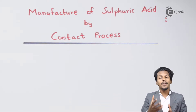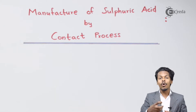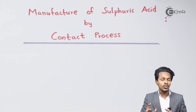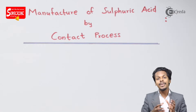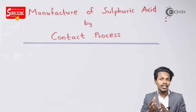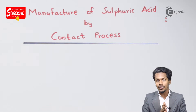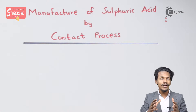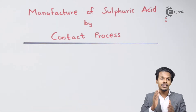Sulfuric Acid is basically prepared from Sulfur. By doing the oxidation process, Sulfur can be converted into SO₂, and then further it would be converted into SO₃, then Oleum, and then H₂SO₄. These are the several reactions that take place in the Contact Process.